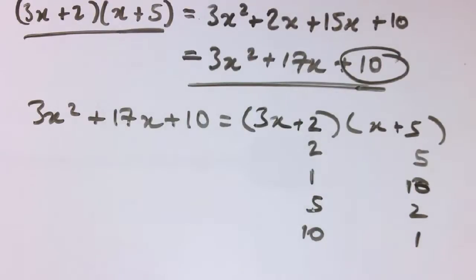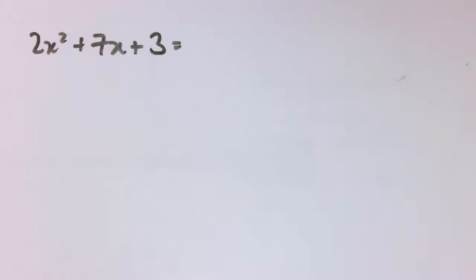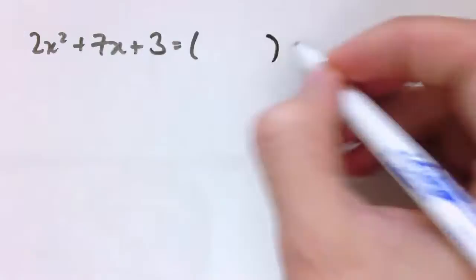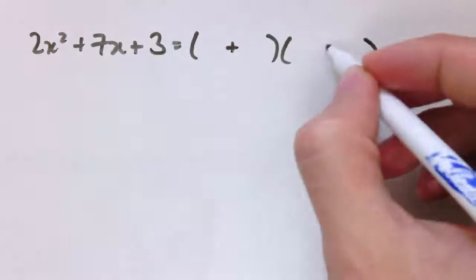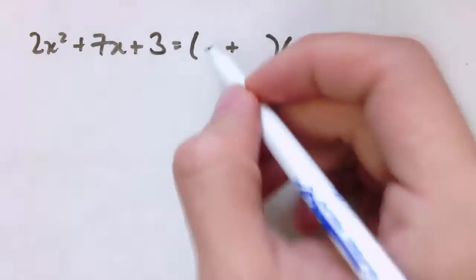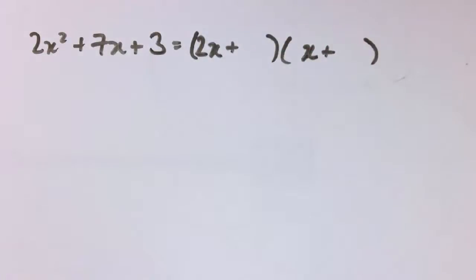When I say do these by trial and error, people think there's loads of work, but for anything worth factorising there isn't that much. If there is too much work, it's not worth factorising — you may as well apply another method. Let's look at a new example: if a quadratic expression is going to factorise, say 2x squared plus 7x plus 3, I'll get two brackets. For 2x squared, the x-terms must be 2x and x — there's no other way with whole numbers.